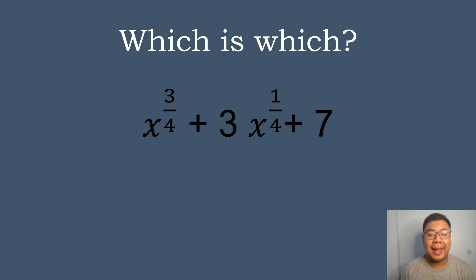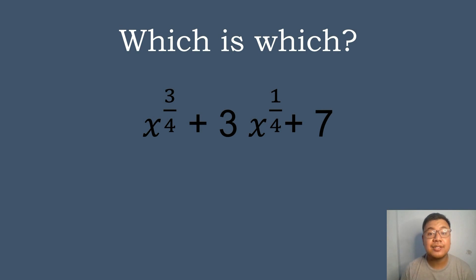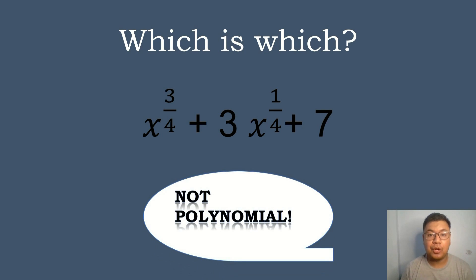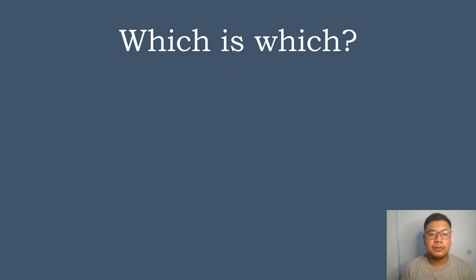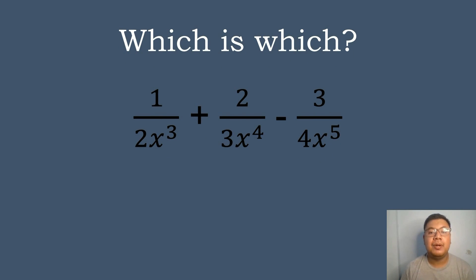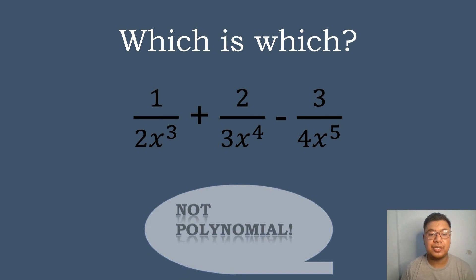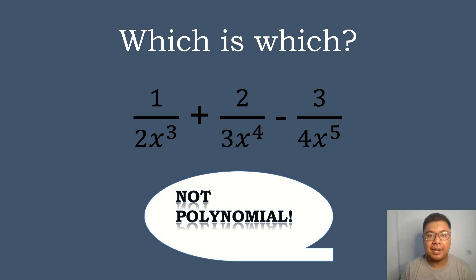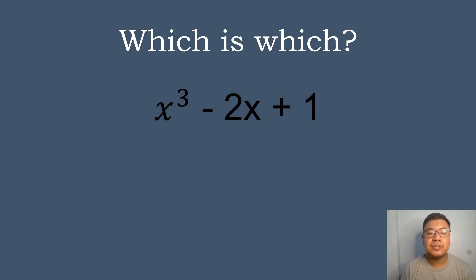Next, how about x to the three-fourth power plus 3x to the one-fourth power plus 7? Is it a polynomial or not? The correct answer is it is not a polynomial. How about the expression x cubed minus 2x? Next one is 1 over 2x cubed plus 2 over 3x to the fourth power minus 3 over 4x to the fifth power. Is it a polynomial or not? The correct answer is it is not a polynomial.